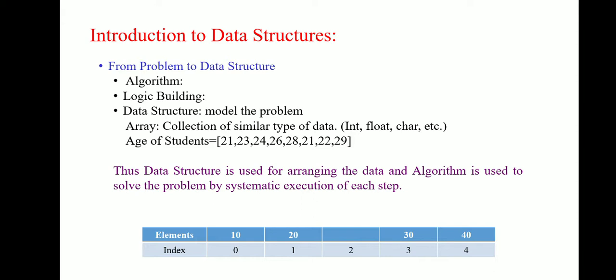In computer science, when we want to solve any problem, then we need data. The data structure that will arrange the data in some specific manner and the algorithm which will handle this data structure in a systematic manner. The data structure is used for arranging the data and algorithm is used to solve the problem by systematic execution of each step.